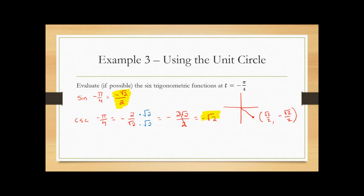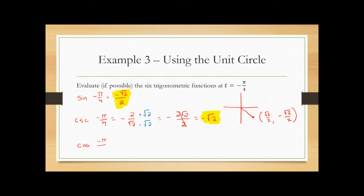Next is cosine of -π/4, which is the X value, so that's √2/2. Because all that's different between sine and cosine here is the sign, the secant — the reciprocal of cosine — will just be a positive √2.